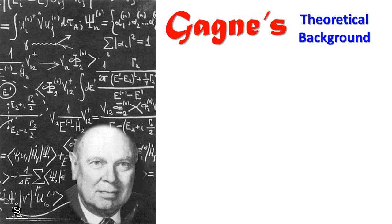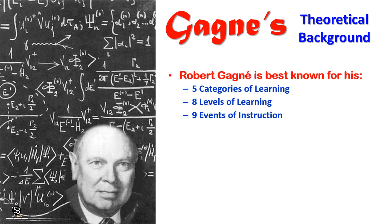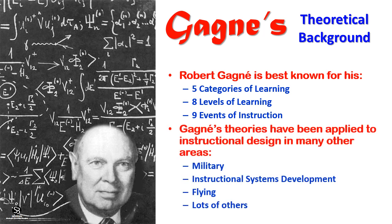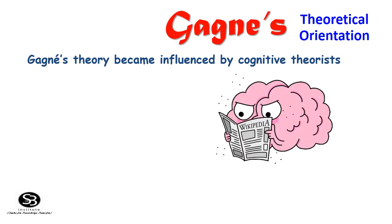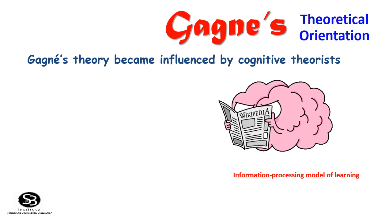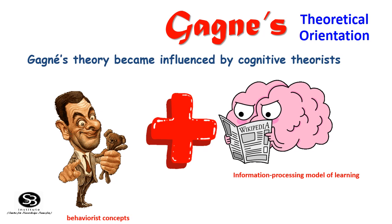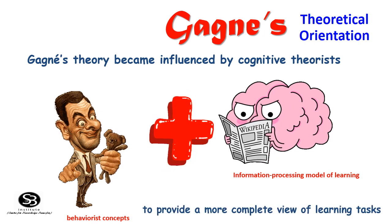Robert Gagné is best known for his 5 Categories of Learning, 8 Levels of Learning, and 9 Events of Instruction. Gagné's theory has been applied to instructional design in many areas such as military, instructional system development, flying, and others. His theory became influenced by cognitive theorists. He proposed that information processing models of learning could be combined with behaviorist concepts to provide a more complete view of learning tasks.